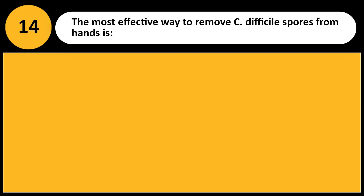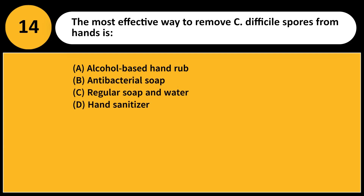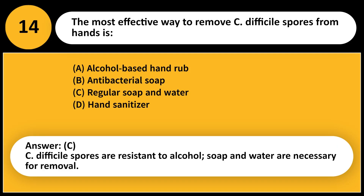The most effective way to remove C. difficile spores from hands is: A. Alcohol-based hand rub. B. Antibacterial soap. C. Regular soap and water. D. Hand sanitizer. Answer: C. C. difficile spores are resistant to alcohol; soap and water are necessary for removal.